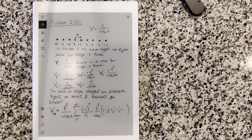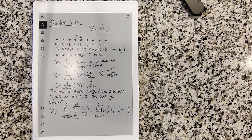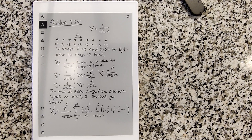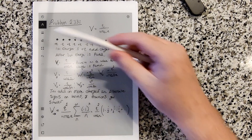Each charge is a distance a from its neighbors. The problem wants us to find the work per particle required to assemble this system, and it gives a partial answer involving a constant alpha called the Madelung constant. It wants us to find what that number alpha is for this arrangement of charges.